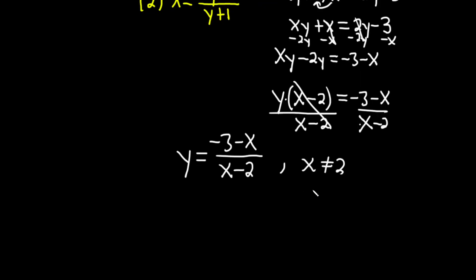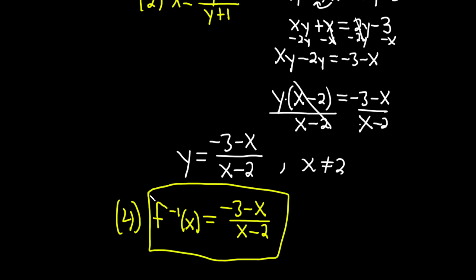So step 4 would be to just use the proper notation for y. It's really f inverse of x. And that's equal to minus 3 minus x over x minus 2. And so this would be the inverse function in this particular example.